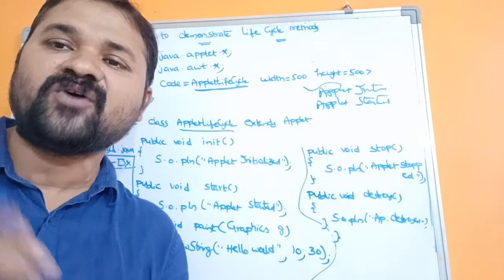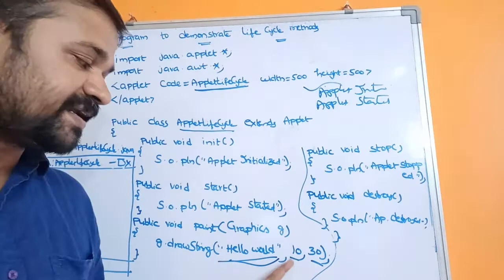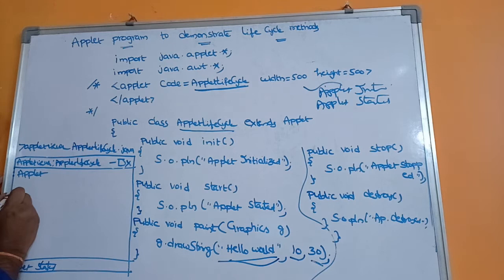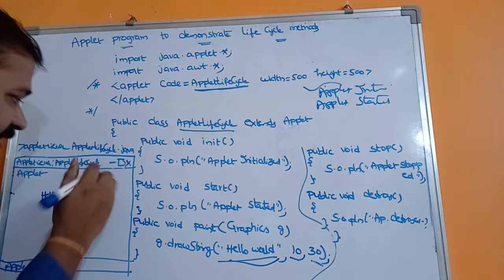In the paint method, it is not possible to use System.out.println. We use the paint method to display something on the applet. Using g.drawString(), we can display a line of text — a string — on the applet. It accepts three parameters: the string, the x-coordinate (top position), and the y-coordinate (left position, e.g., 30 pixels from the left). So 'Hello World' will be printed from that pixel position.